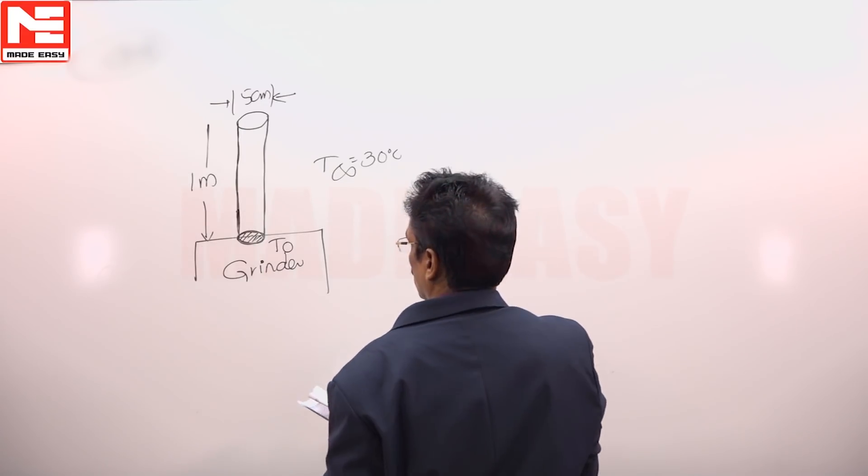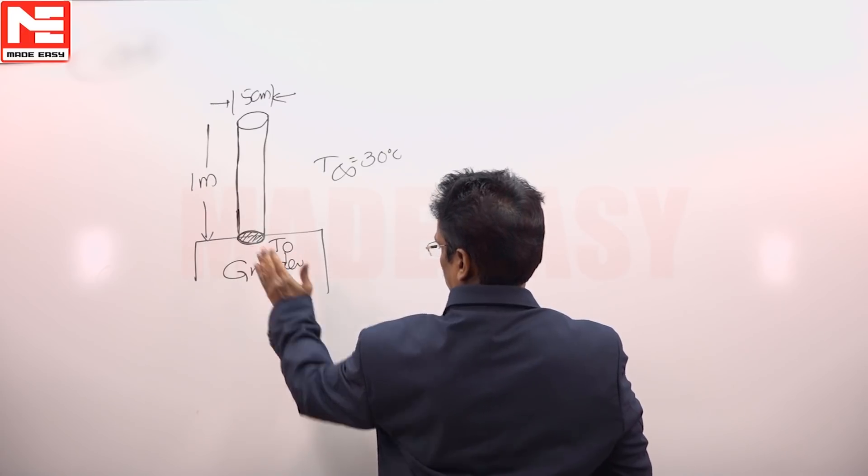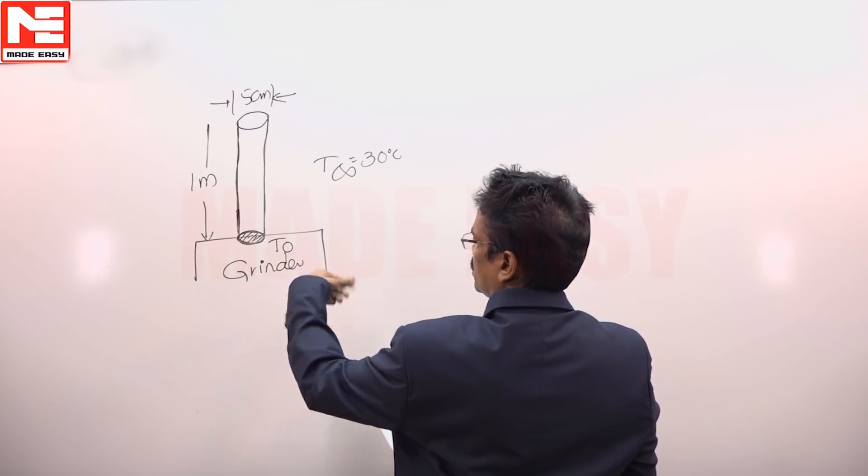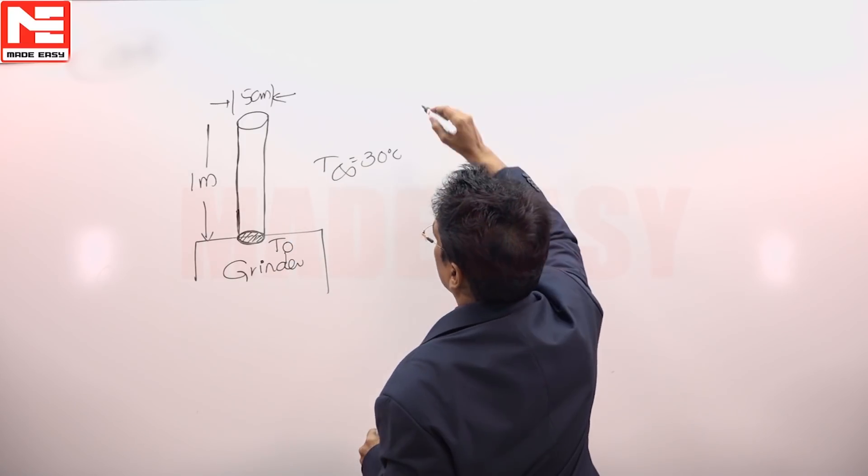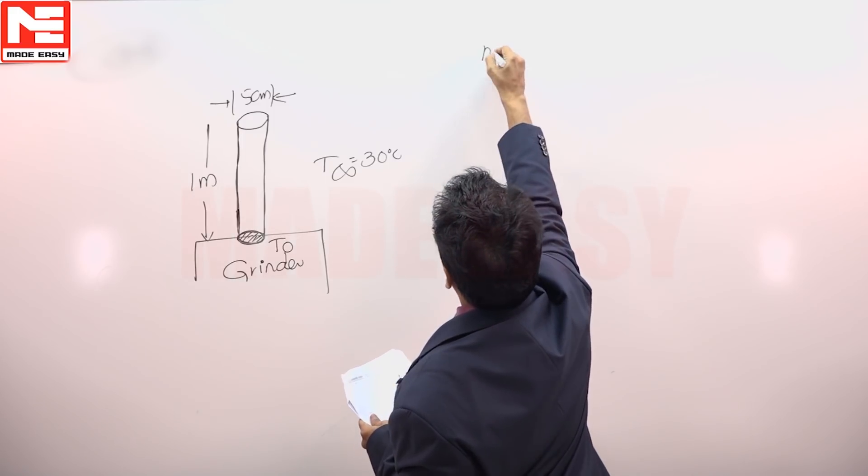So we need to calculate what would be the temperature of the rod at that grinding wheel. The grinding wheel is dissipating mechanical energy which is converting into heat energy. We can take that as insulated tip case. First of all, let us calculate what is the M value of the fin.